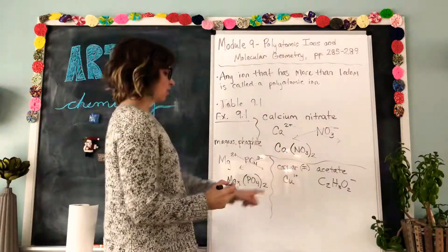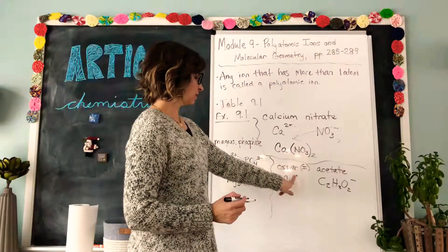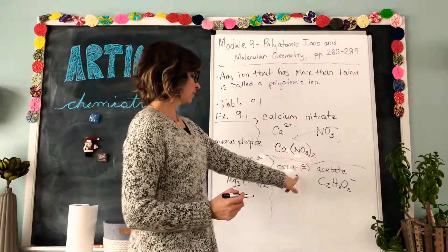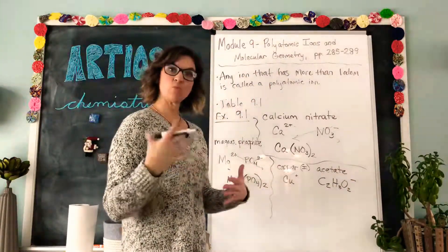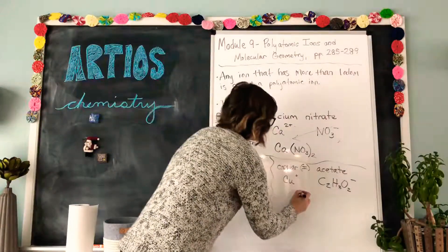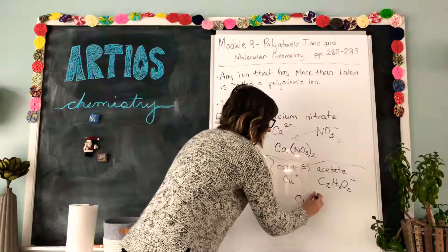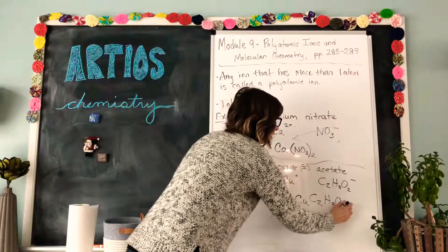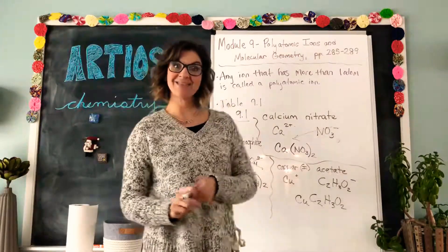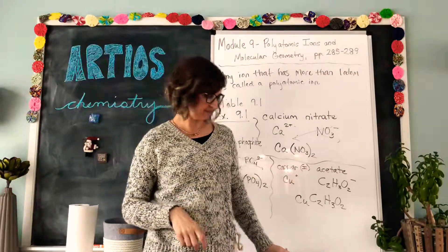So the one plus, oh silly me, I put the one down, we don't need the one there, we just need a plus sign. So the plus and the minus would cancel each other out, meaning you just need one of each. So the overall formula would be Cu and then write out acetate, C2H3O2. And that my friends is how you work with polyatomic ions.